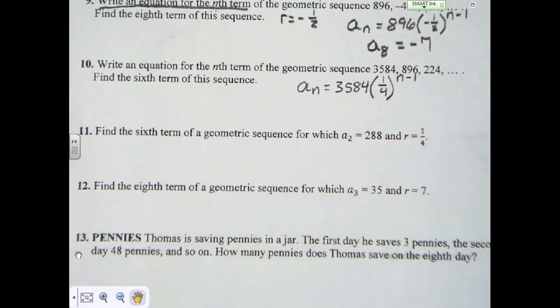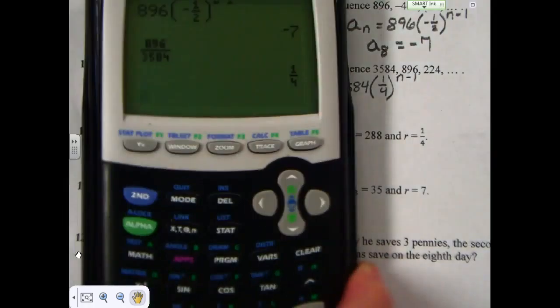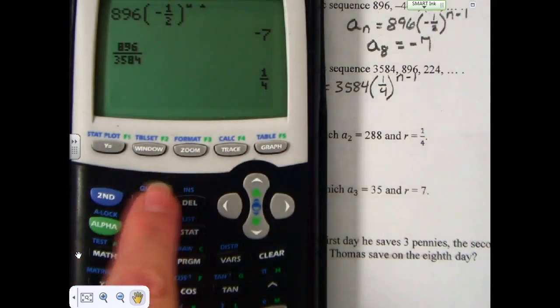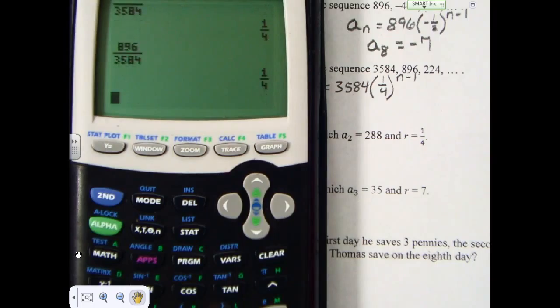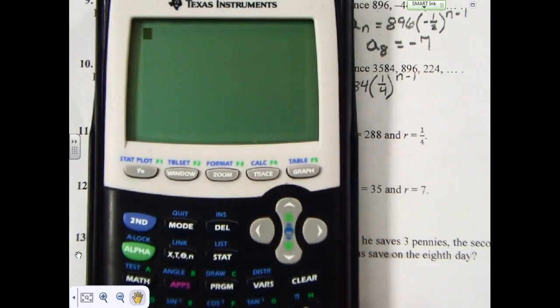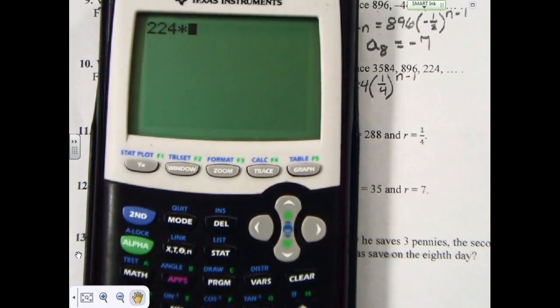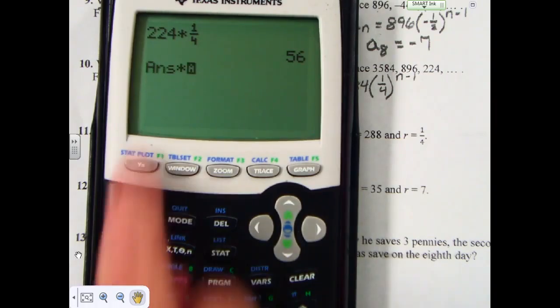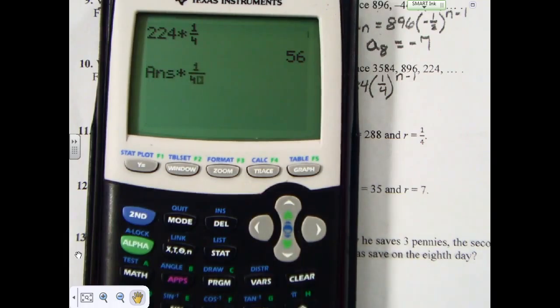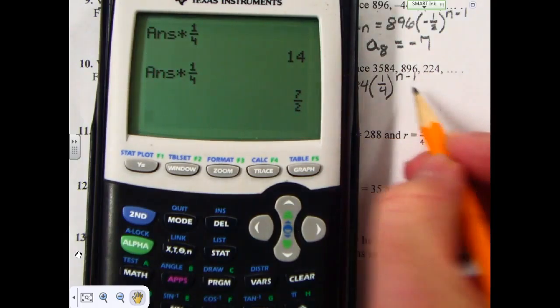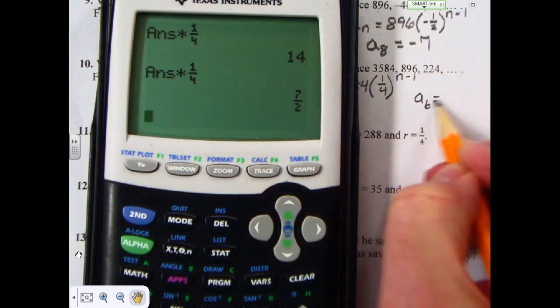Now, because we know the common ratio is 1 fourth, instead of using this formula, whether we use the equation, or what we know about geometric sequences, I should get the same answer for the 6th term. For this one, I'm going to use the fact that the third term is 224, and multiply that by 1 fourth. That tells me the fourth term is 56. If I multiply that by 1 fourth again, the fifth term is 14. And if I multiply that by 1 fourth yet one more time, the sixth term is 7 halves. A sub 6 equals 7 over 2.